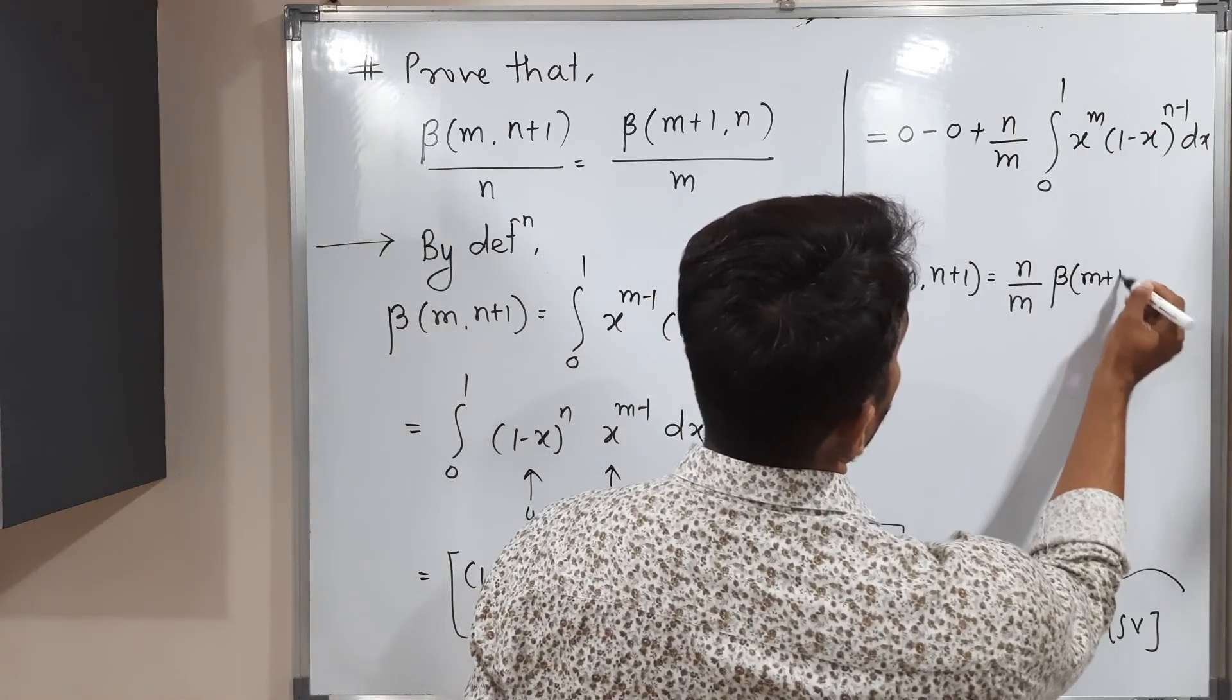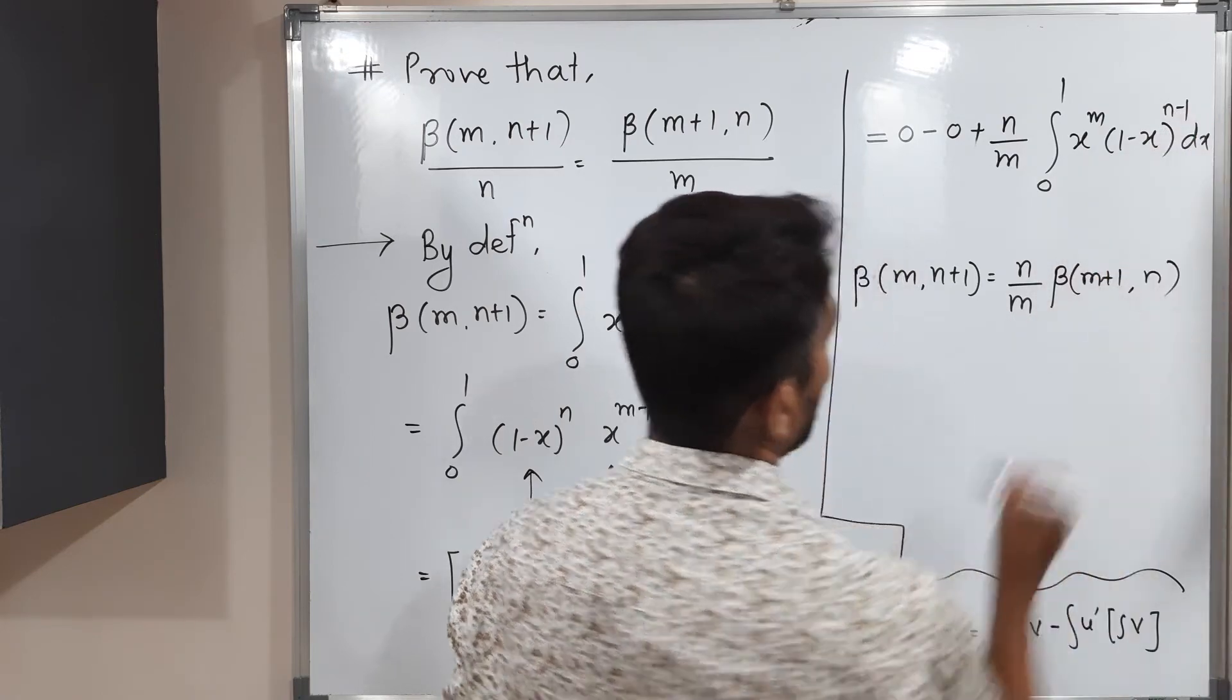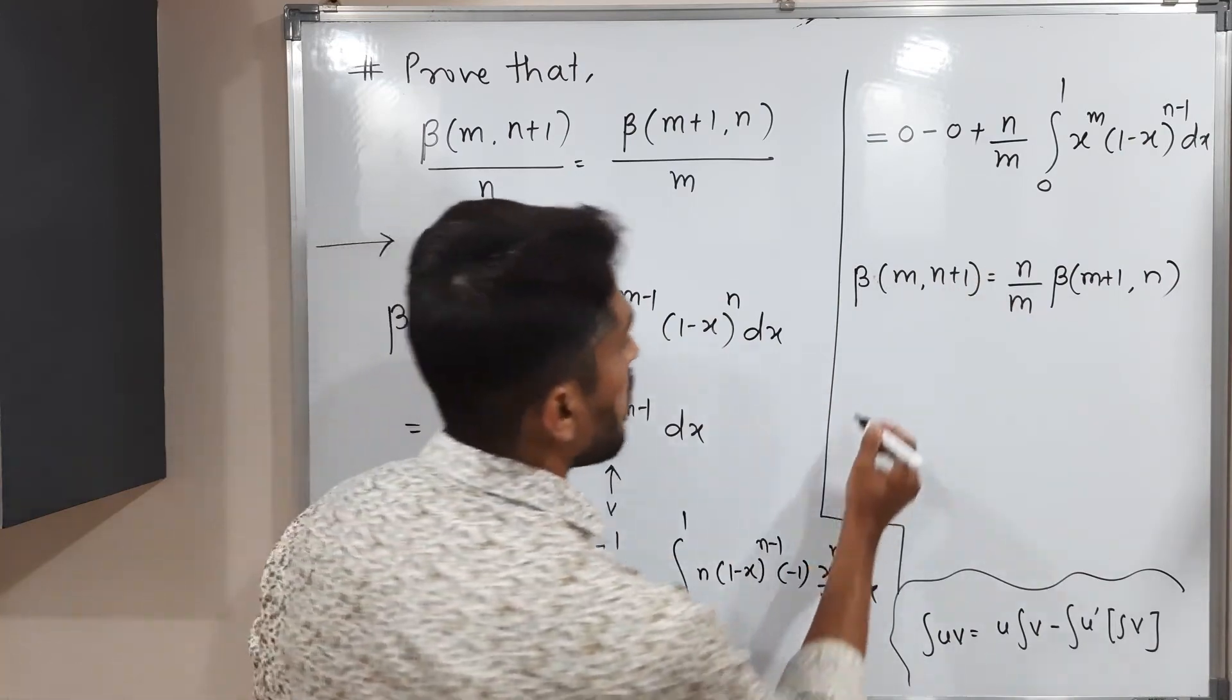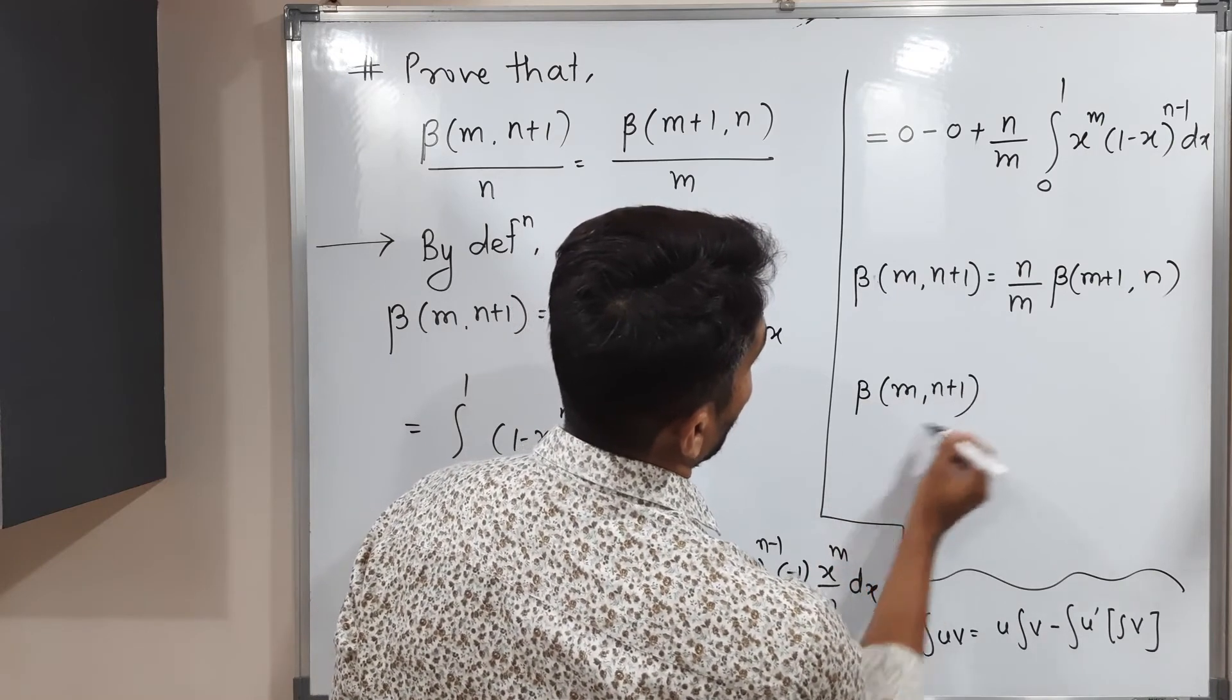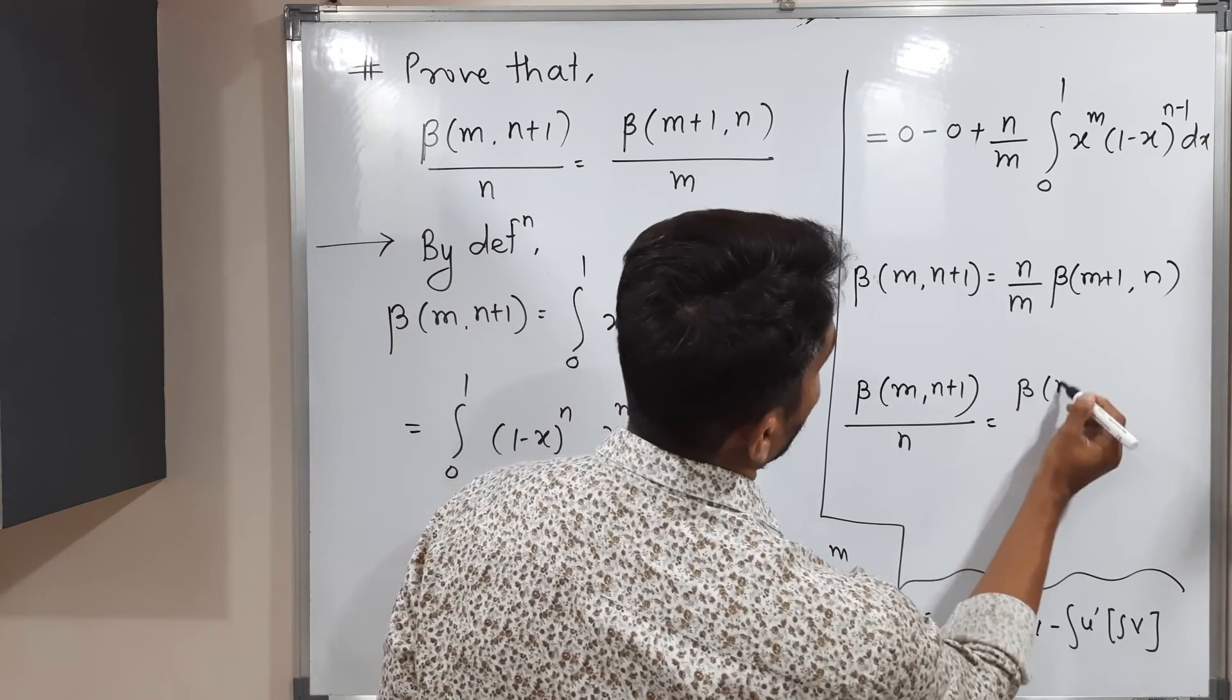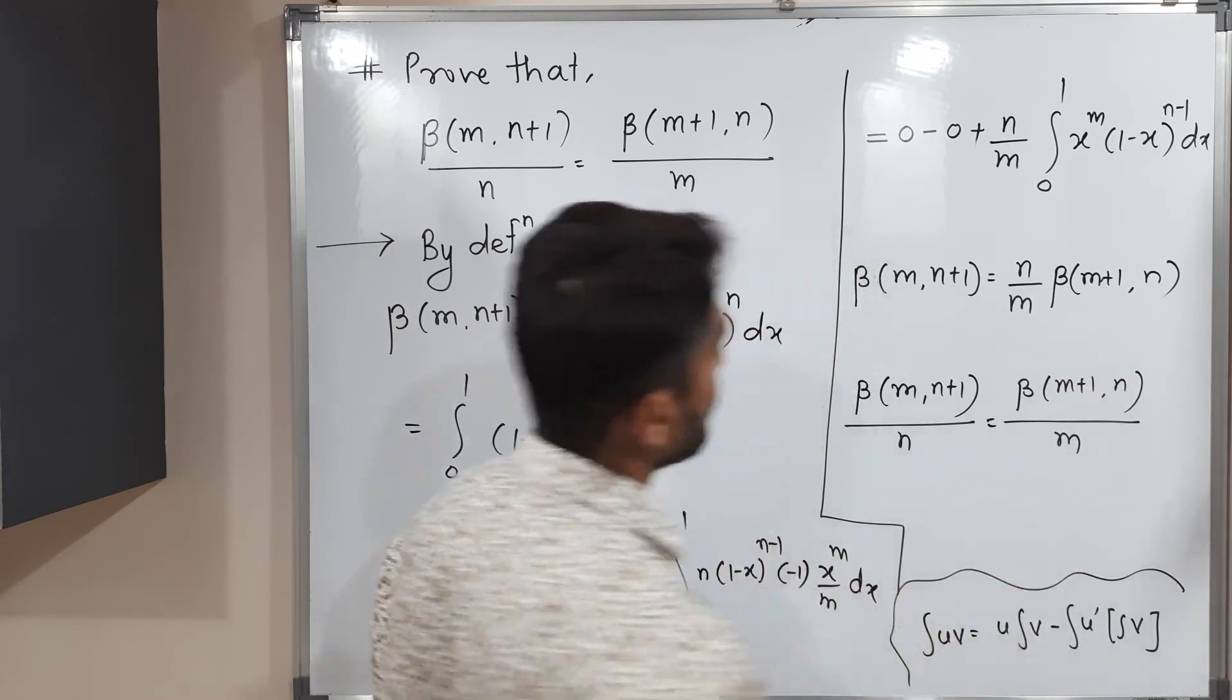Beta of, we're supposed to add 1 here. So m plus 1. Here also we add 1. So plus 1 minus 1 cancel, n. Let us take that n in the denominator. So we will have beta of m, n plus 1 divided by n. And here beta of m plus 1, n divided by m. Yes.